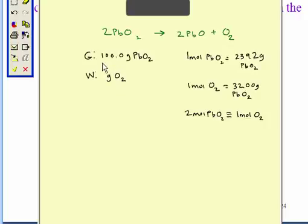Okay, so the first thing we want to do is write down our given and our wanted. And we notice that we have mass of one chemical given and we want the mass of a different chemical, and they're related through a balanced chemical equation.